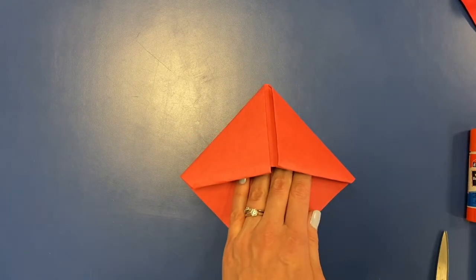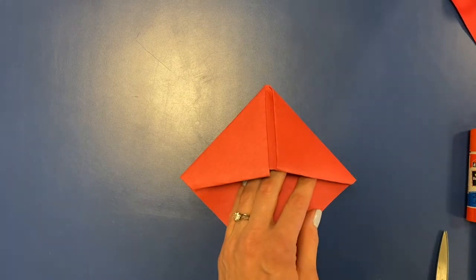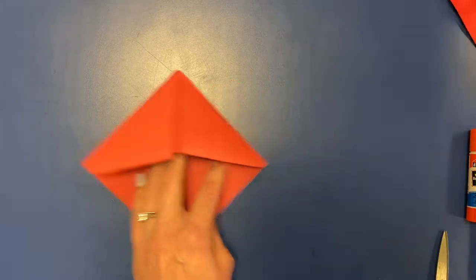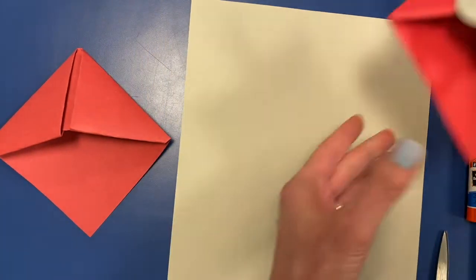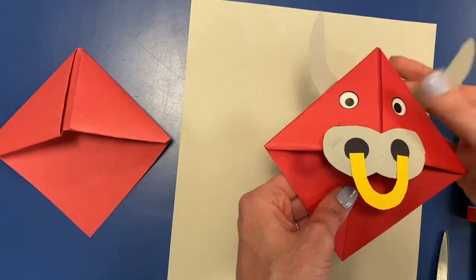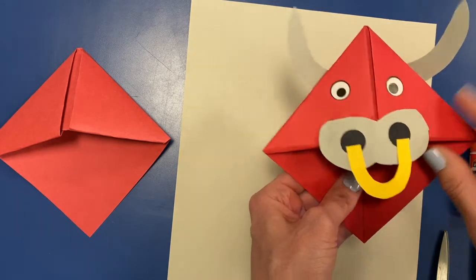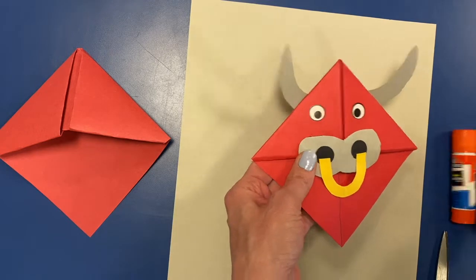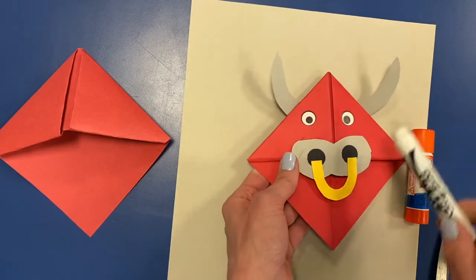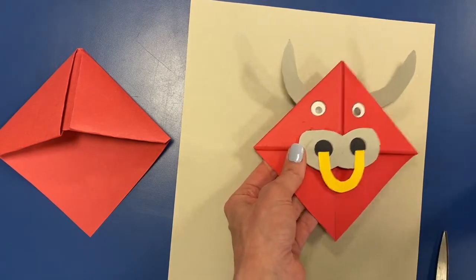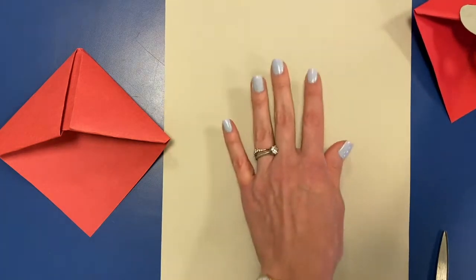So next we're going to grab the gray piece of paper and we're going to cut out the antlers or the horns and the nose. So I'm going to draw two crescent shapes and something that looks a little bit like a figure eight so that I can cut those out of this gray paper. It kind of looks like a banana.